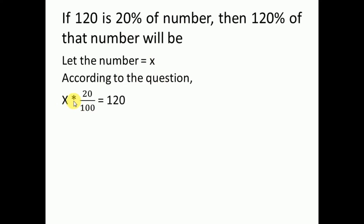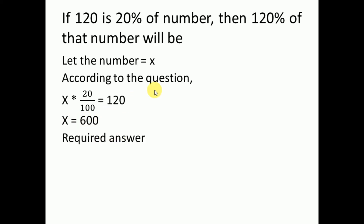According to the equation: x × (20/100) = 120, so x = 600. Now we need 120% of that number: 120/100 × 600 = 720. The required answer is 720. Which is very easy.